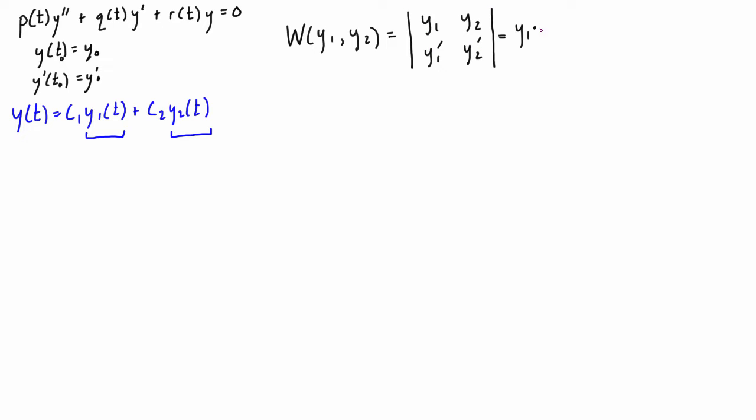The other thing you need to do is this thing called the Wronskian. It looks like this and it's basically just the determinant of this little matrix that we construct using y1, y2, and their derivatives. You will need to have two solutions to do this. Basically, we compute the determinant, and so long as it's not equal to zero, then we know that these two solutions will form a fundamental solution set.